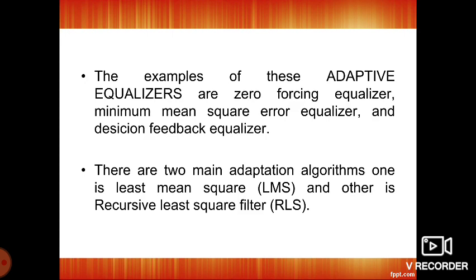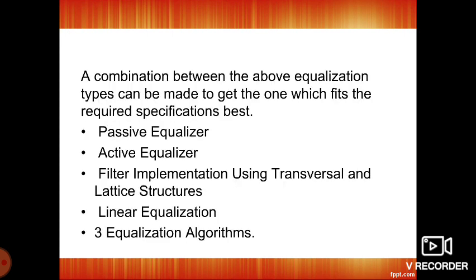The basic types of equalization are: if equalization is done at the transmitting side, it is called pre-channel equalization, and if it is done at the receiver side, it is called post-channel equalization. Pre-channel equalization requires feedback to know the amount of distortion in the received data. The combination between the equalization types can also be made into one, which is fit for some specifications — that is, passive equalizer and active equalizer.